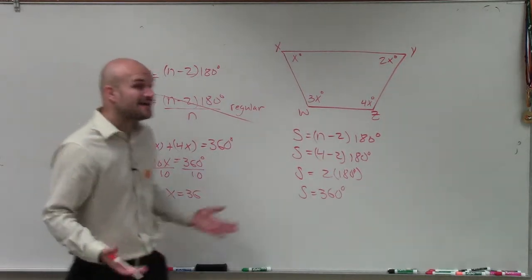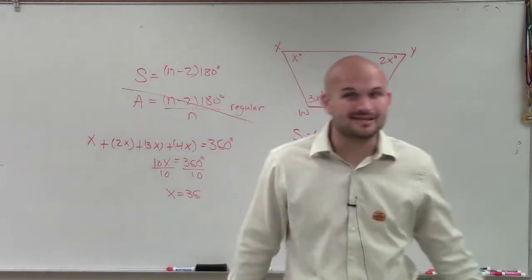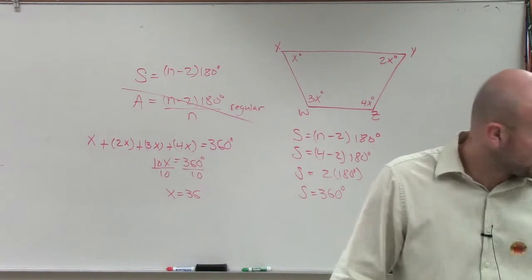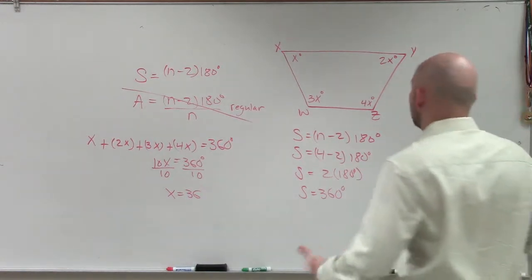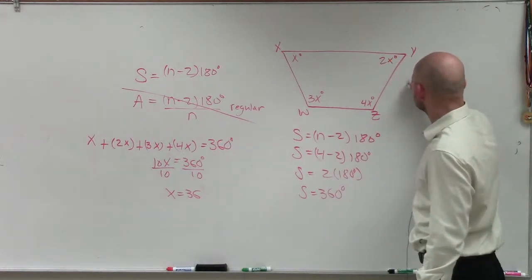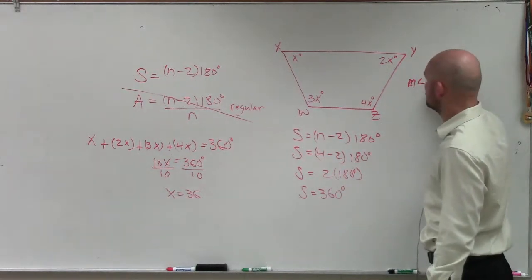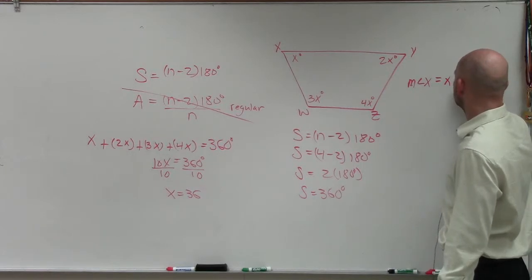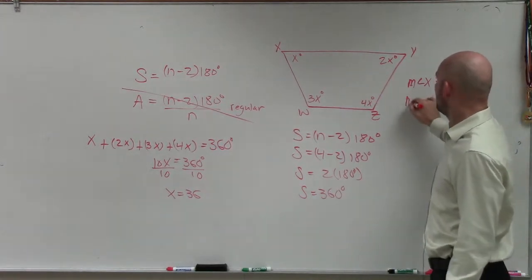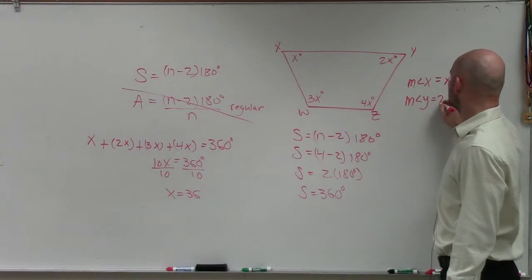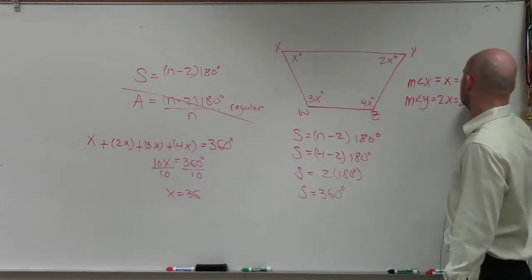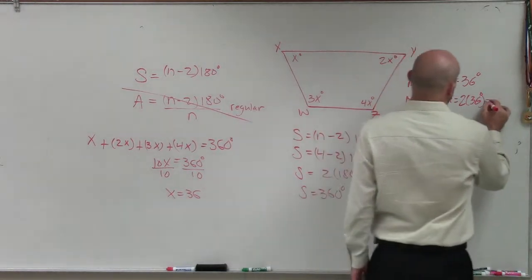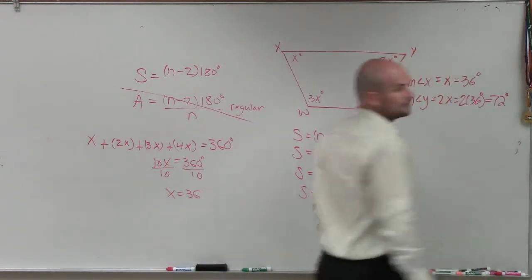So the value of x equals 36. But ladies and gentlemen, that's not the whole problem, is it? They say, now I want you to find what is measure of angle x, what is measure of angle y, what is measure of angle w, what is measure of angle z. So measure of angle x. Well, x just equals x. So that's equal to 36 degrees. Measure of angle y. That equals 2x. So that's 2 times 36 degrees, which is equal to... Very good.